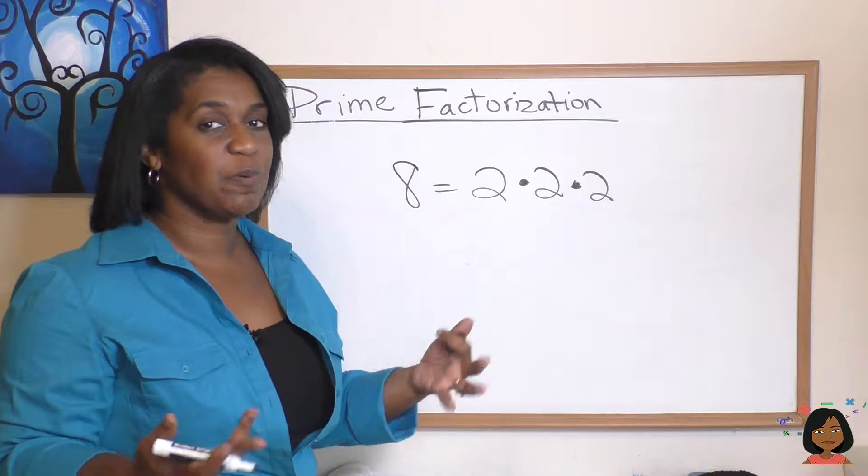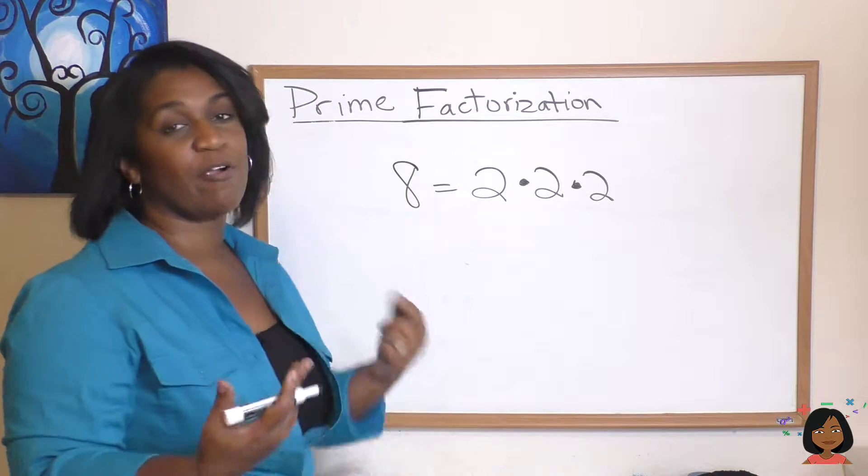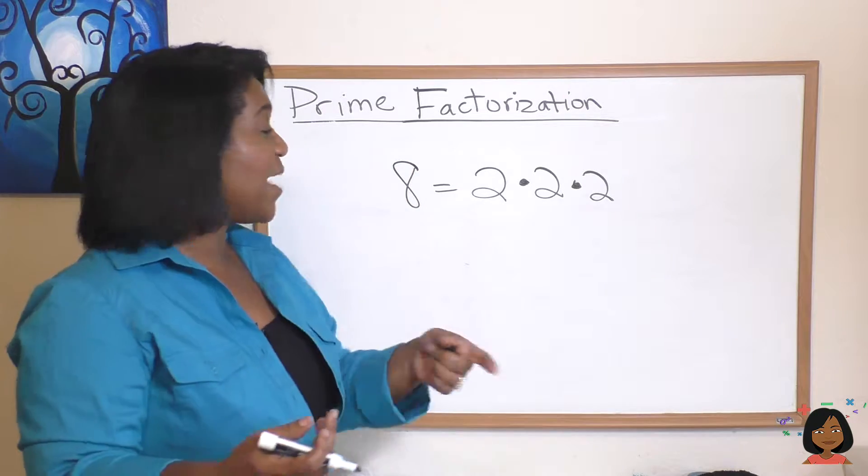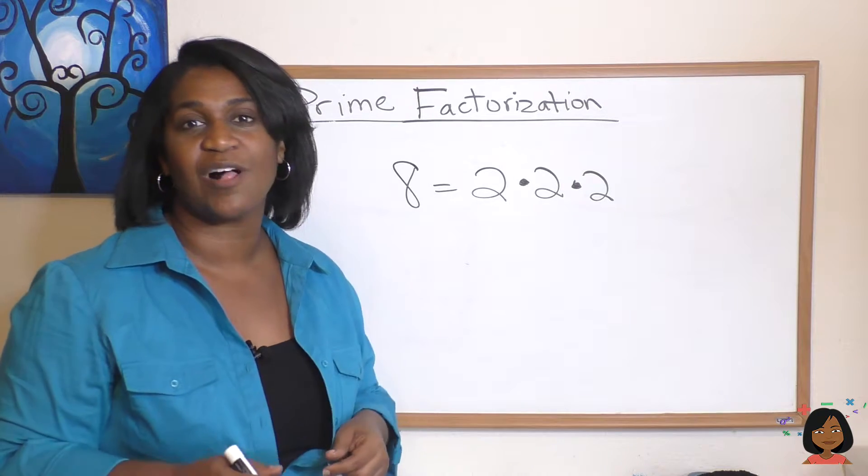We can do this with bigger numbers and to do it with bigger numbers we can use one of two methods to find the prime factorization, meaning find the prime numbers that make up our number. So let me show you the first one. It's called a factor tree.